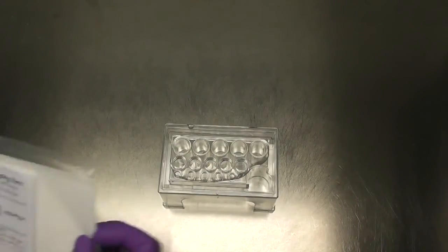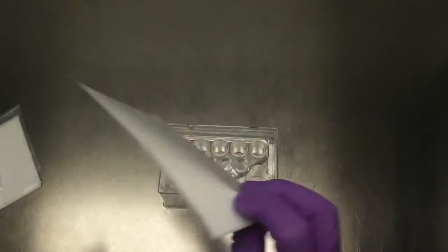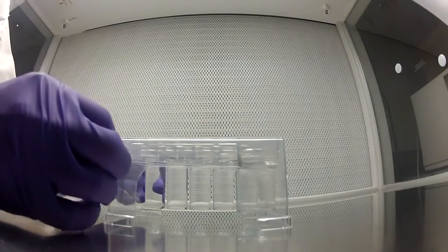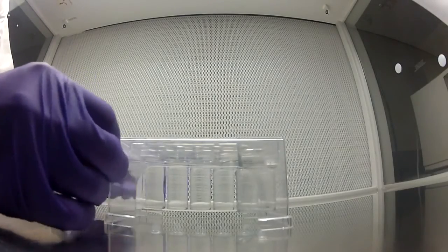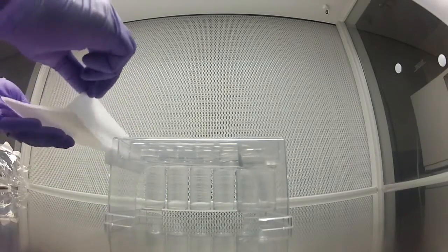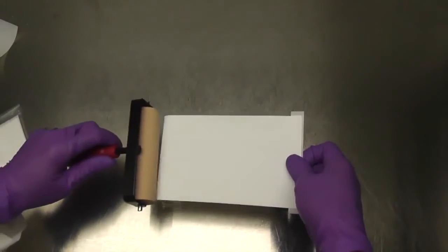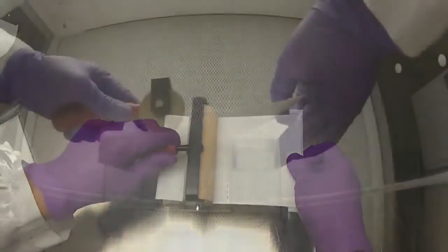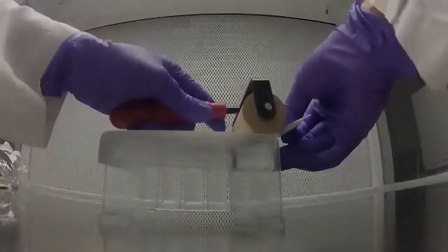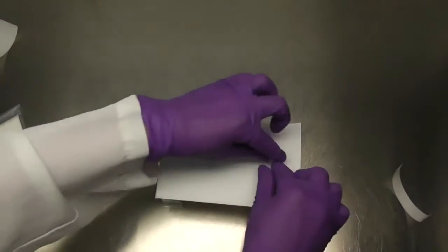Next, take a piece of the sterile sealing film and remove the first paper tab. Affix the film to the end of the plate and remove the larger paper tab. Use the roller to finish sealing the plate across the wells from one end to the other. Remove the final paper tab and finish sealing the film around the sides.